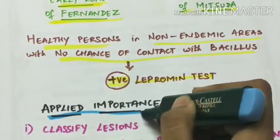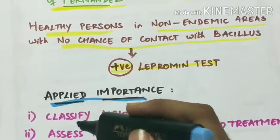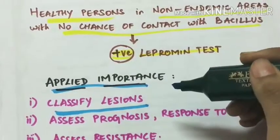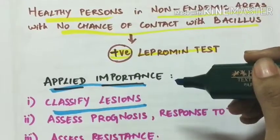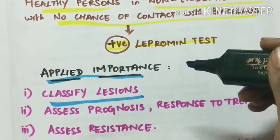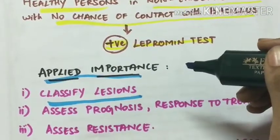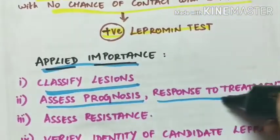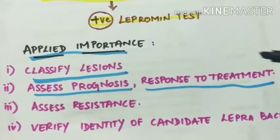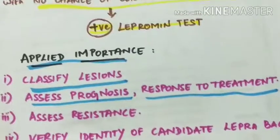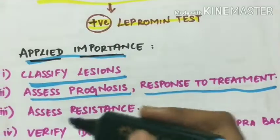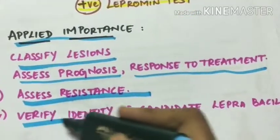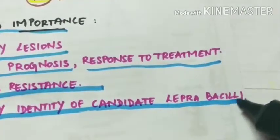Applied importance of the lepromin test: it is used to classify lesions — positive in tuberculoid and negative in lepromatous leprosy, and variable in indeterminate types of disease. Second, to assess the prognosis and response to treatment — a positive reaction indicates good prognosis. Third, to assess resistance and to verify the identity of candidate leprabacillin.